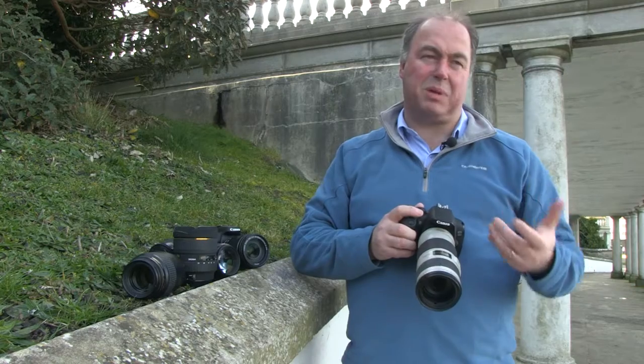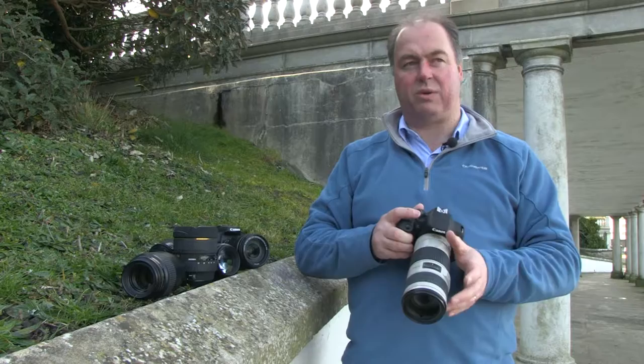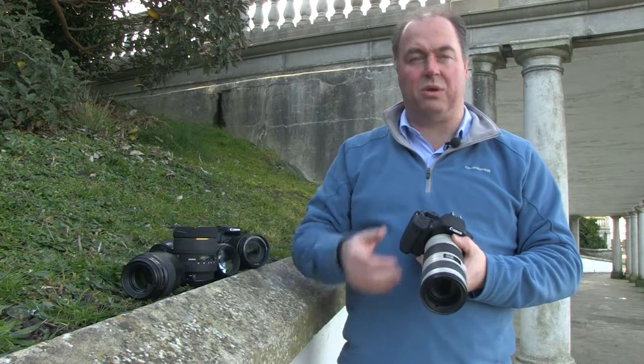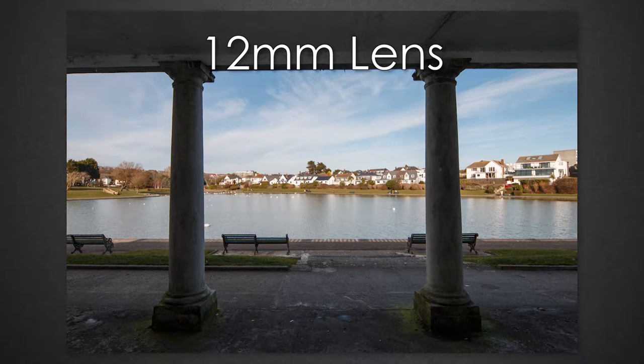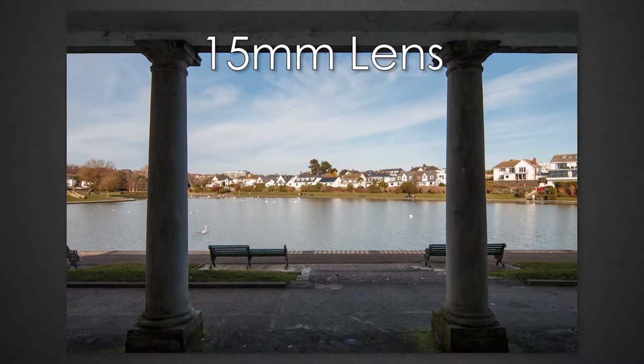We're going to take some pictures to illustrate the effects and how the field of view changes by using different lenses — from the wide angle through to the telephoto. We've put the camera on a tripod and we're going to start with our first lens, the 12 to 24, to give us a real wide angle view of our scene. We'll take a picture at 12 millimeters and then move through each of the marks on the focal range, taking a picture at each of the settings.